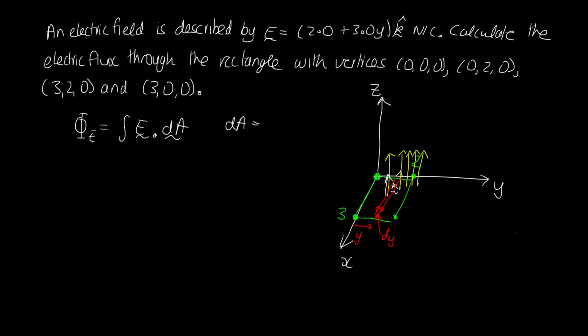So we can write dA as, well, in the x-direction, this rectangle has a length 3. And then it will be times dy. And the direction is the k-direction. So we can write our vector dA this way. So now what we can do is we can substitute into this equation.